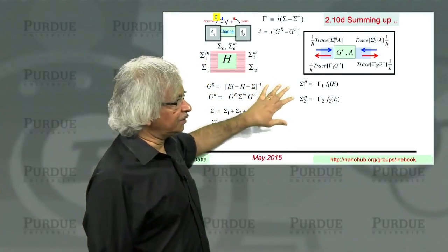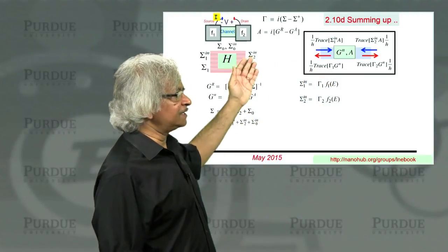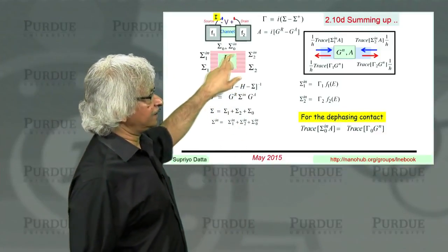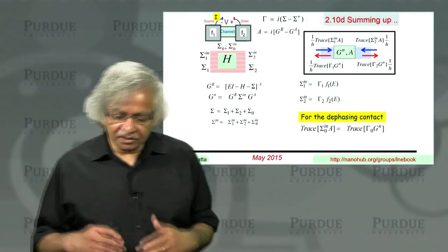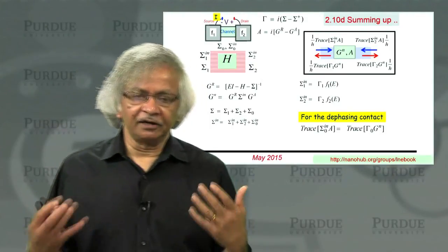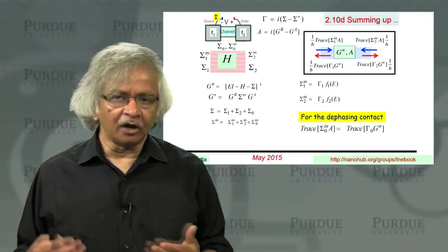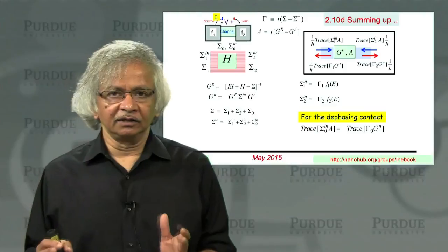But this argument, that sigma n equals gamma times f only applies if the contact itself is in equilibrium. But if you look at this dephasing contact, which as I mentioned is extremely important, because usually electrons suffer these dephasing processes as it goes through the device, which often destroys a lot of interference effects.